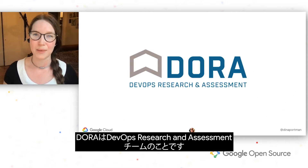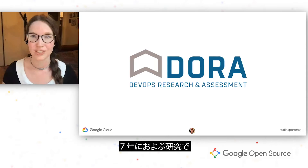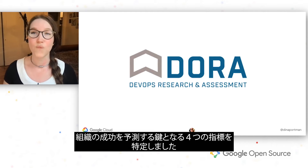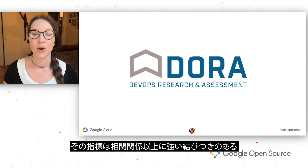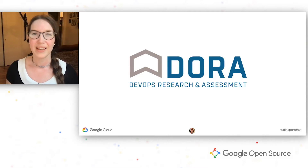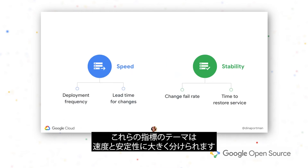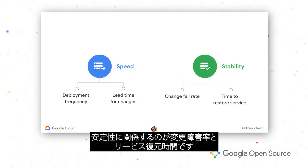And that brings us to DORA. DORA is the DevOps Research and Assessment team. Over seven years of research, they identified four key metrics to predicting organizational success. I want to point out that these are predictive metrics, which is a stronger relationship than correlation. Roughly, these metrics fall into speed and stability.